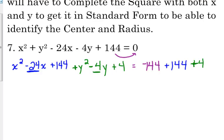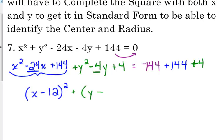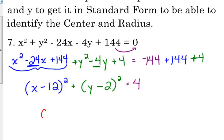Now we're going to write it in standard form. Look at what I have in blue: x squared minus 24x plus 144. We're going to factor that. The whole purpose of completing the square was that it factored the same way every time — it's always x and whatever number you squared. We squared negative 12, so we put x minus 12. Same thing with the y's: we squared negative 2, so it's y minus 2. Negative 144 plus 144 cancels, so we've just got 4 on the right side. Our center is positive 12, positive 2, and our radius is 2.